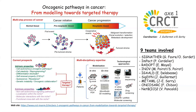Cancer development is a multi-step process characterized by the accumulation of genetic alterations, where the first oncogenic event can reprogram normal cells from a normal tissue into cancer-initiating cells. This establishes a pre-neoplastic tissue, and then the following mutations transform those cells into malignant cancer subjected to clonal evolution and selection processes.